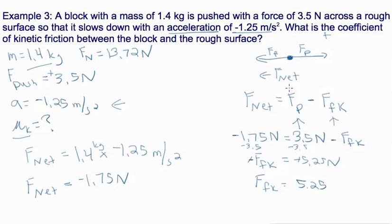Now to calculate this last step we use our friction equation and we have calculated our normal force up here. So we say that 5.25 newtons equals the coefficient of kinetic friction times 13.72.